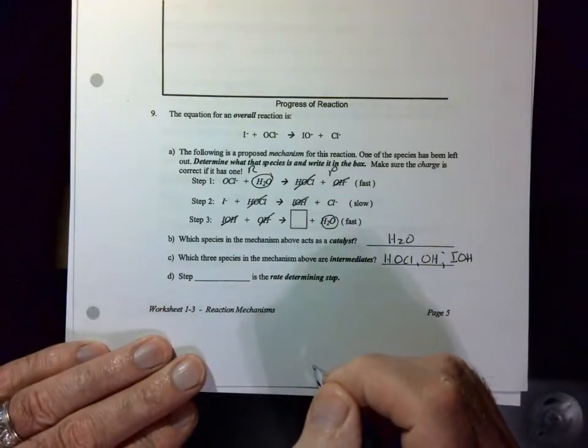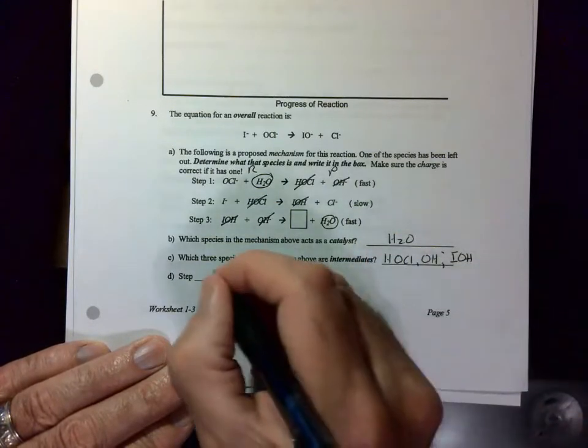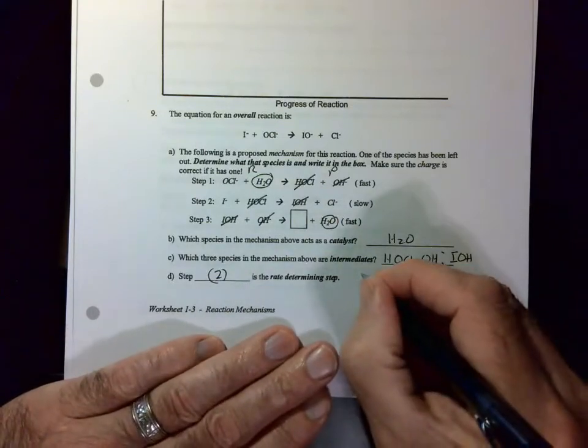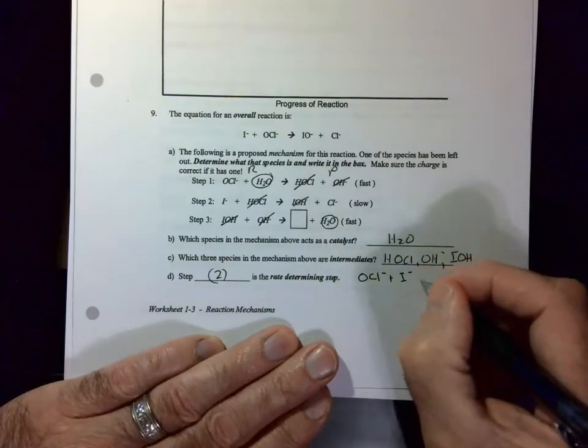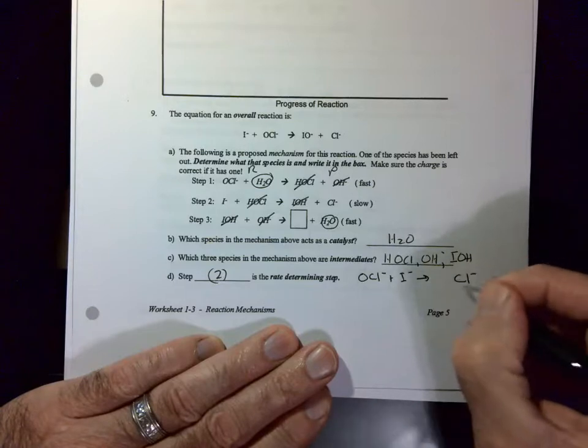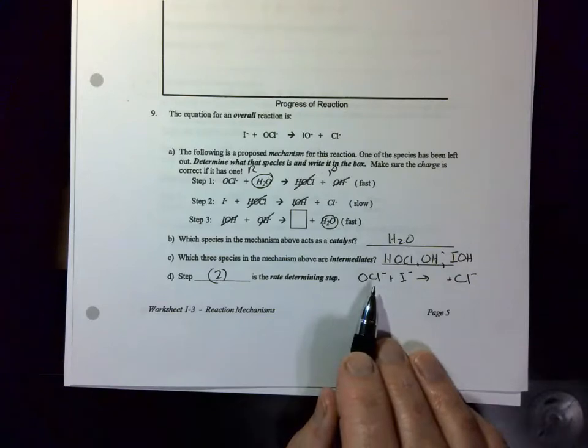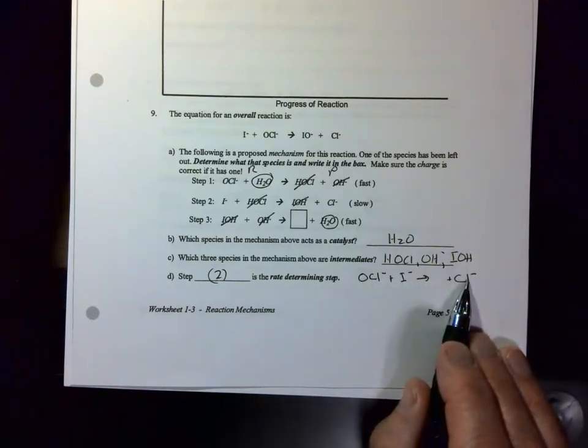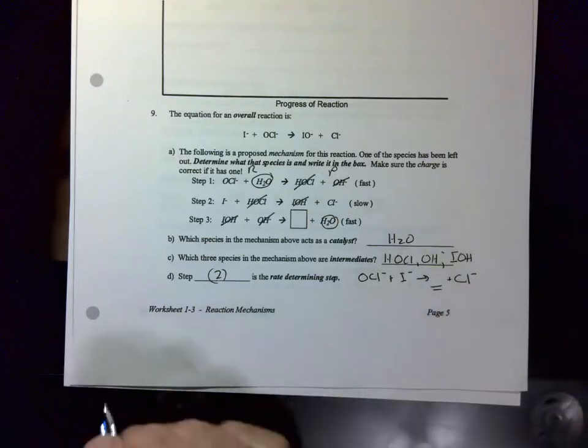So that means that the rate determining step is number two because it's the slow one. If we look at the overall reaction here, we have HOCl- plus I- gives Cl- and something is missing. So to figure out what's missing, you have to take a look at what's on the reactant side but not on the product side, and you have to fill that in.